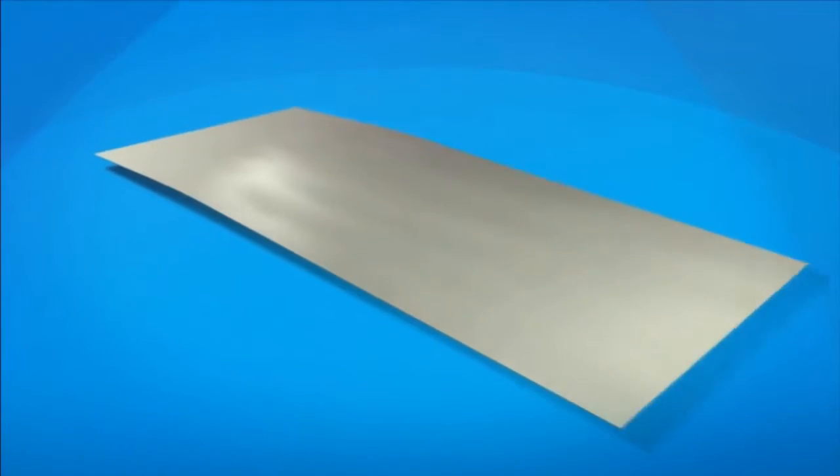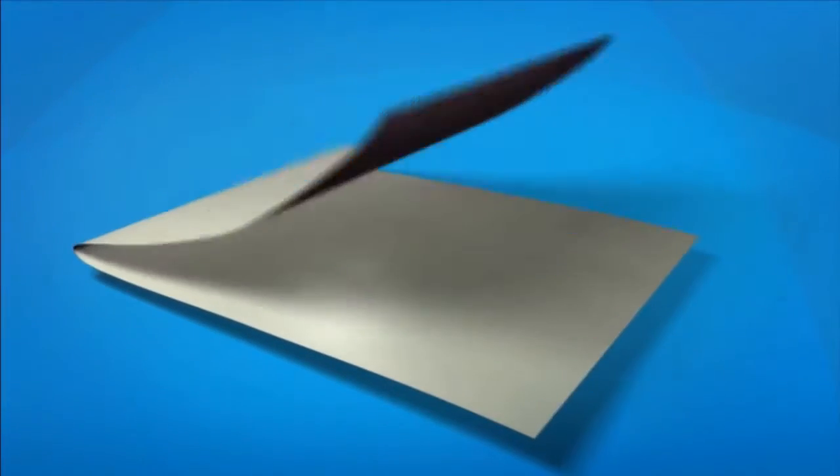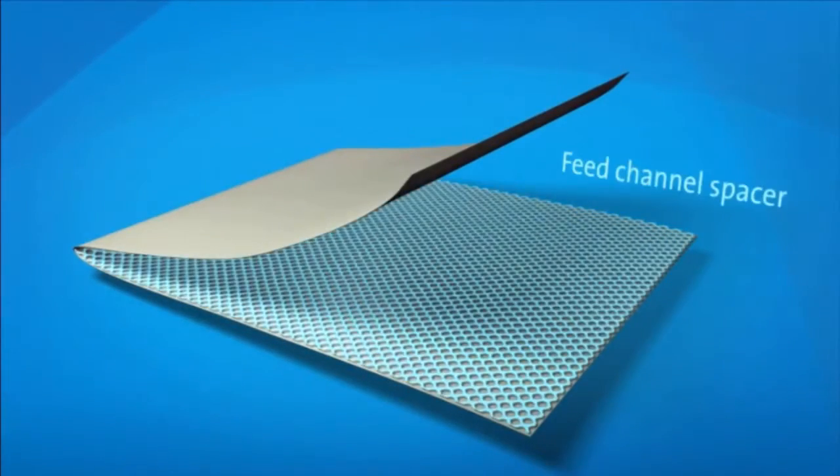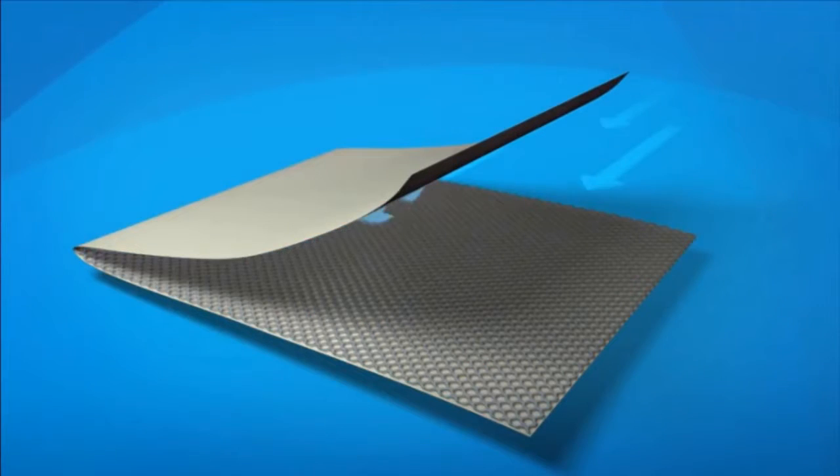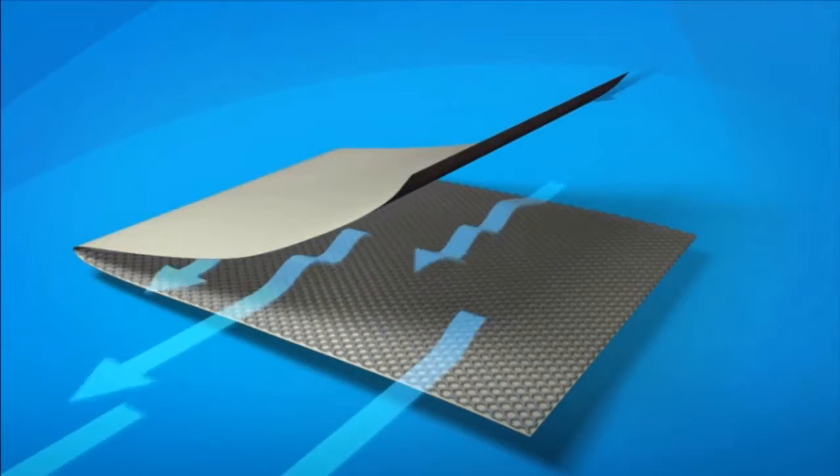The membrane flat sheet is combined with a sheet of feed channel spacer. This provides turbulence and creates space between the membrane sheets for the feed water.